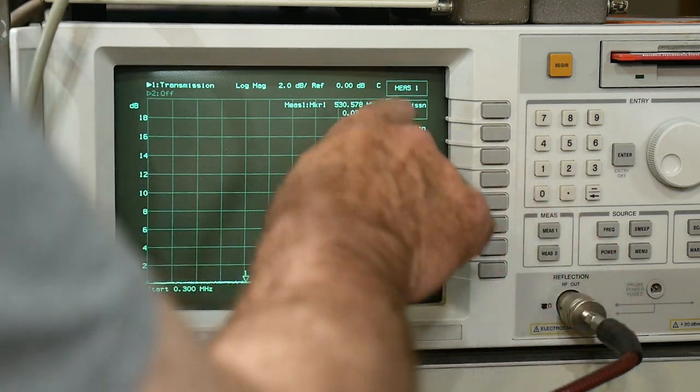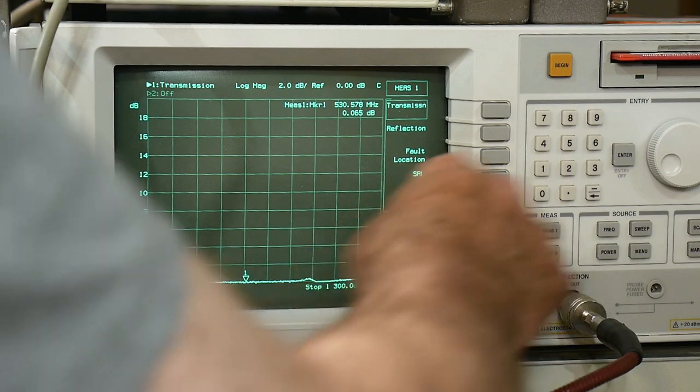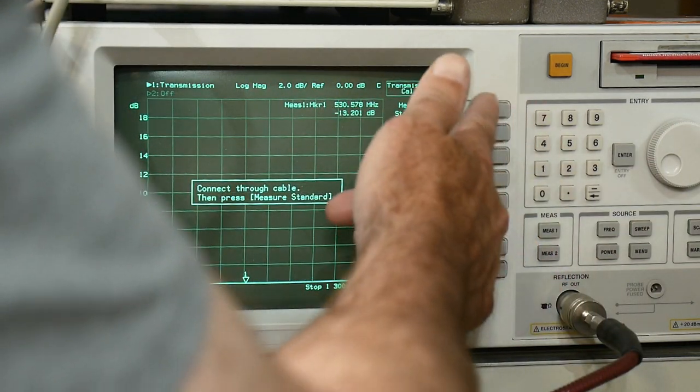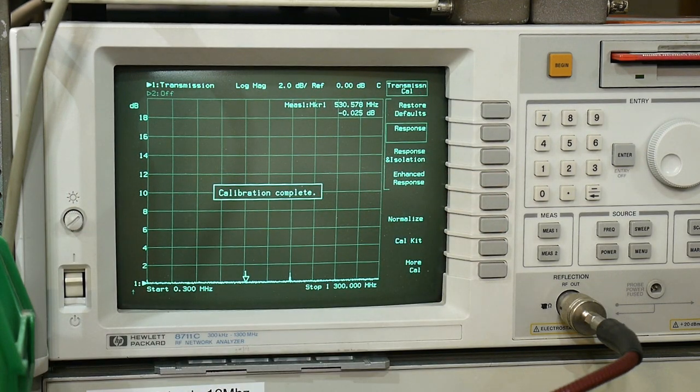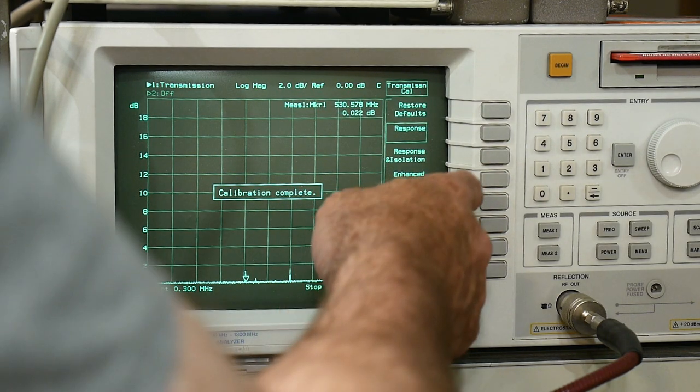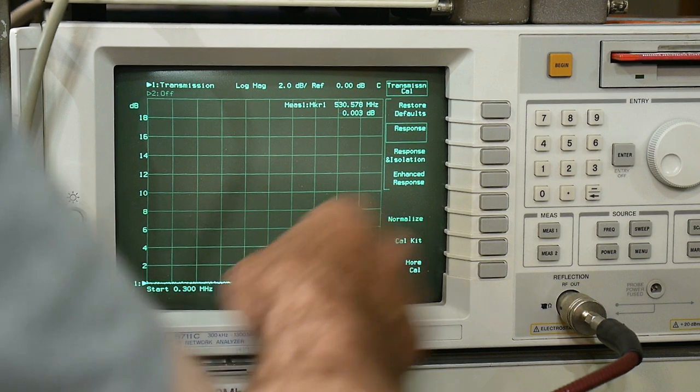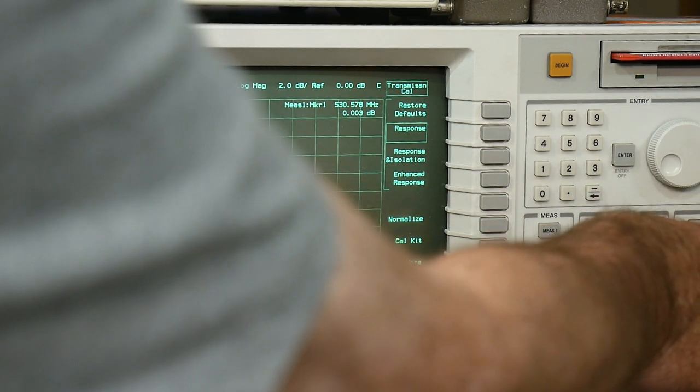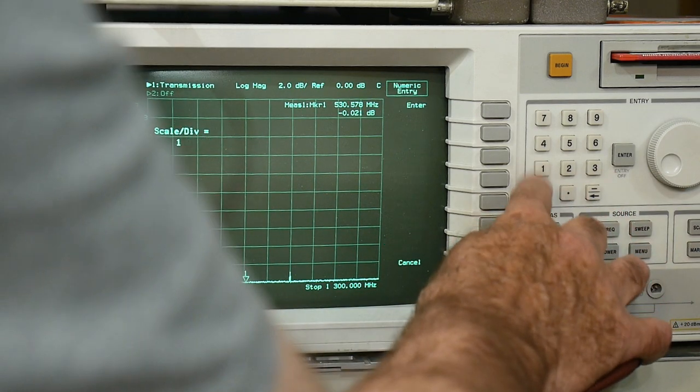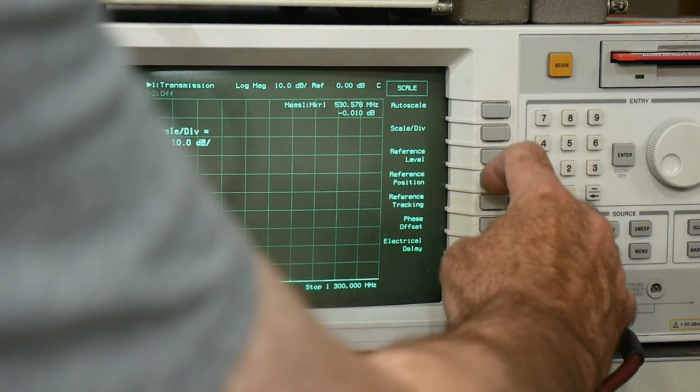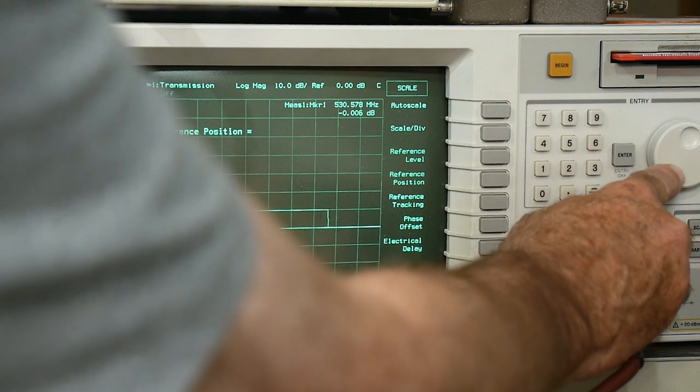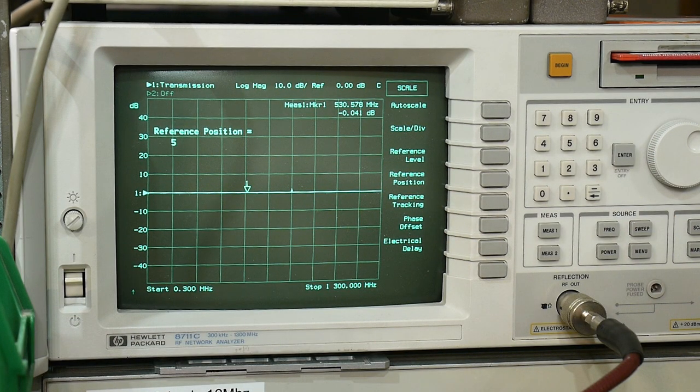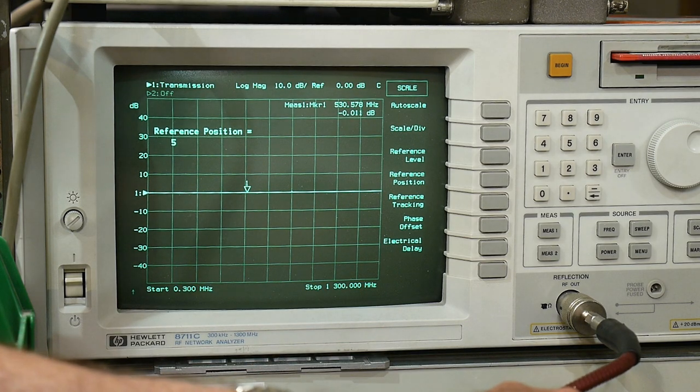And then we will need to calibrate. We're going to do a transmission measurement. We're going to do a cal, and we're going to do a response. We're going to measure the response. It calibrates it and it gives us, let's see, we want to do a scale of 10 dB per and a reference position. All right, so we have a nice straight line now, and we can insert our amplifier.